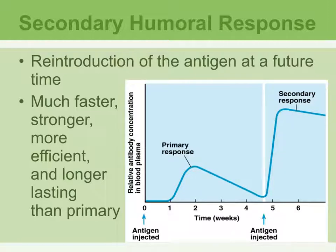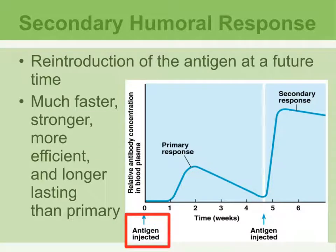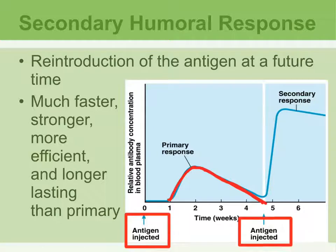Comparing the primary and secondary responses: at time zero, exposure to the antigen occurs. After about a week, there is a surge of antibody production, and as the pathogen is destroyed, antibody levels go down. The second time the person is exposed, the response time is very short, the antibody production is much greater, and the pathogen is destroyed at a much faster rate.